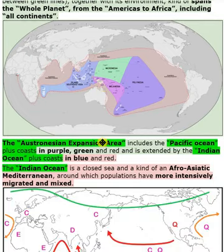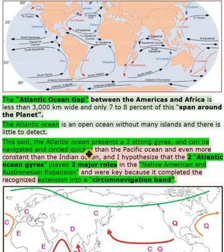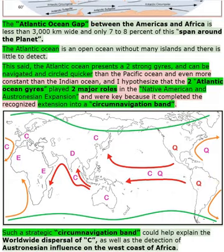The Atlantic Ocean gap between the Americas and Africa is less than 3,000 km wide and only 7–8% of the span around the planet. The Atlantic Ocean is an open ocean without many islands and there is little to detect. That said, the Atlantic Ocean presents two strong gyres and can be navigated and circled quicker than the Pacific Ocean and more constantly than the Indian Ocean. I hypothesize that the two Atlantic Ocean gyres played two major roles in the Native American and Austronesian expansion and were key because they completed the recognized extension into a circumnavigation band.